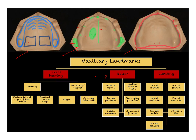The primary stress-bearing areas of the maxilla are the posterior lateral slopes of the hard palate and the residual alveolar ridge. The secondary stress-bearing area is the rugae and maxillary tuberosity. The limiting areas are the freni, sulci, hamular notch, posterior palatal seal, and fovea palatinae.